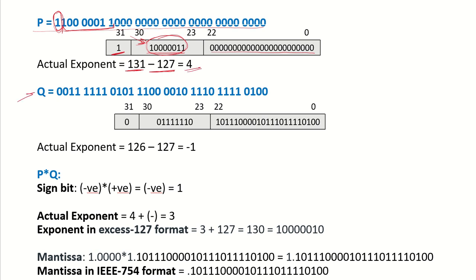Looking at Q, the 31st bit is 0, showing it is a positive number. The next 8 bits represent the decimal value 126, and 126 minus 127 gives us minus 1, which is the actual exponent for Q. The remaining bits give us the mantissa.